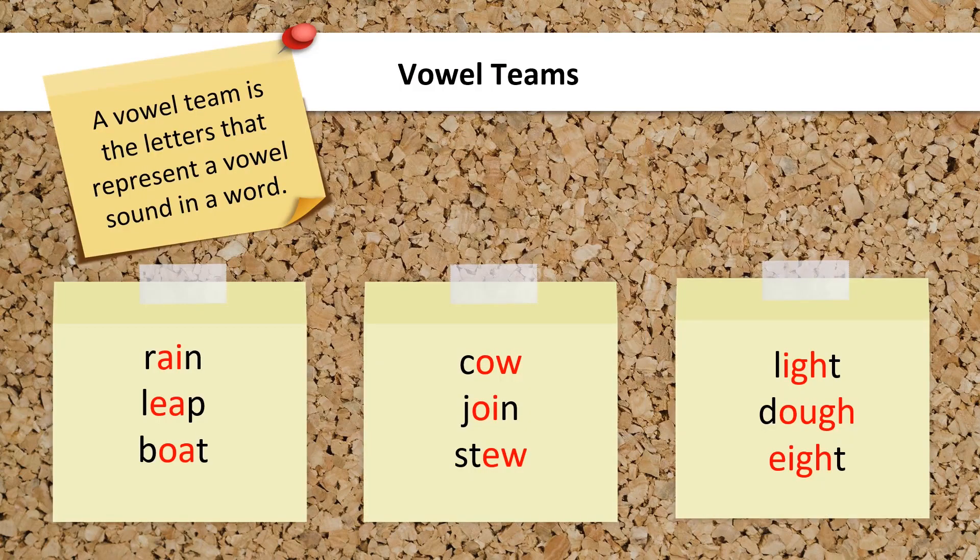A vowel team is the letters that represent a vowel sound in a word. Most often, it is two vowels together to make the vowel sound, such as in the digraphs AI as in rain, EA as in leap, or OA as in boat.